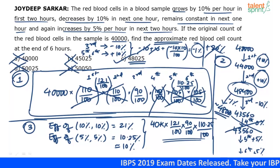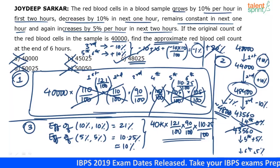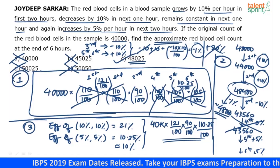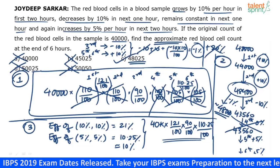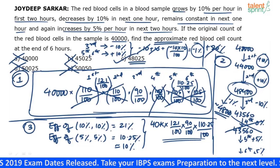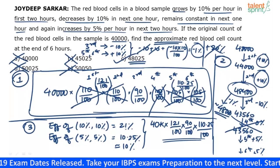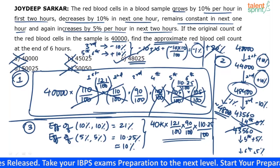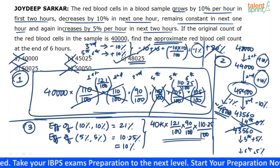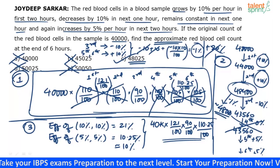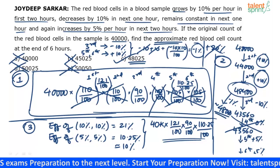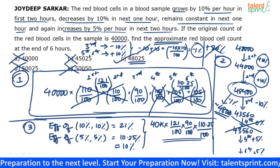Don't be confused by the clutter on screen — there are three methods shown. Method 1 is step-by-step multiplication. Method 2 uses effective percentage for pairs of hours. Method 3, the best one, clubs the third, fifth, and sixth hours together for a net −1% reduction, giving a final answer close to 48,000. The only option close to 48,000 is option C.